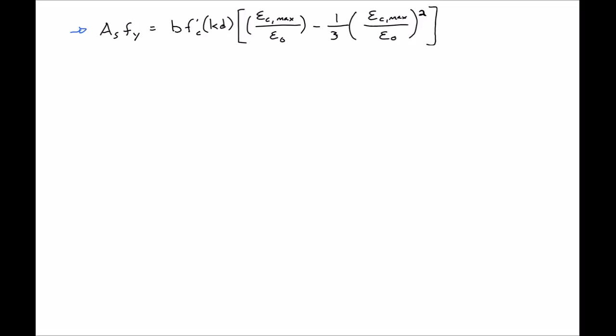And now we can substitute in for EC max in terms of epsilon y. So we know that our epsilon C max is equal to our epsilon sub y times KD divided by D minus KD. And now we can substitute this value in for our epsilon C max.